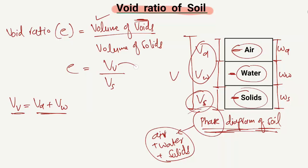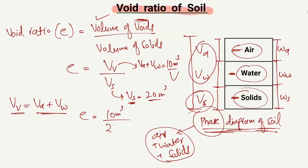Now for example, we know that the volume of voids — the combination of volume of air and volume of water — is equal to 10 cubic meters. The volume of solids VS is equal to 20 cubic meters. So the void ratio e will be equal to the volume of voids, which is 10 cubic meters, divided by the volume of solids, which is 20 cubic meters.